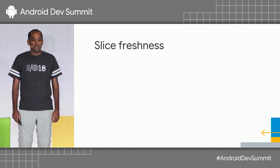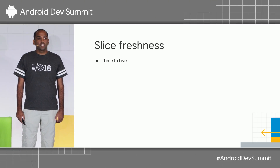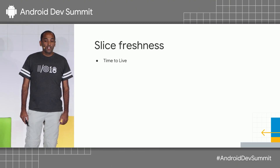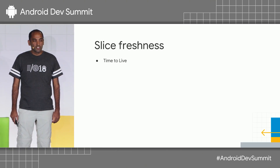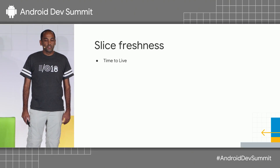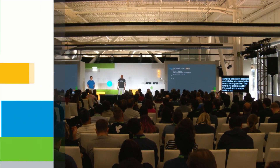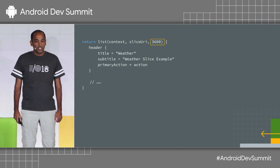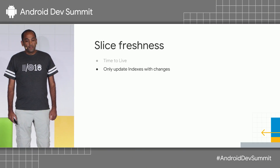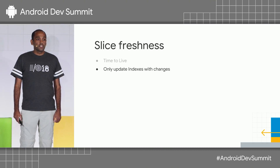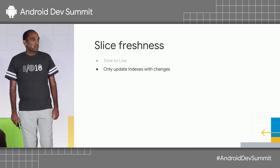Let's see how to keep your Slices fresh. When a Slice is indexed, the Indexable object includes both the Slice metadata and a cached snapshot of the Slice. To ensure the Slice provided to search autocomplete is always accurate and not stale, you should set a time-to-live on your Slice. This TTL field is used by the Google Search app to ensure stale caches are not displayed. In this code example, the time-to-live for the weather Slice is set to a one-hour expiration. If your Slice has content that is not time-sensitive, just use a time-to-live of infinity. Also periodically re-index your Slices in the background when content changes and only when content changes. Do not re-index more than once per day to avoid battery issues.